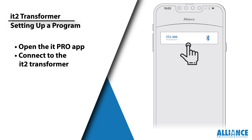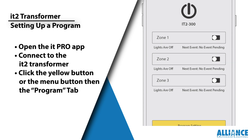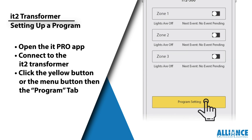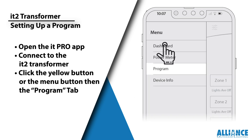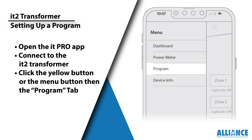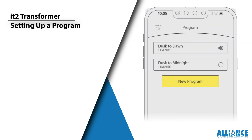Connect to the Transformer through the IT Pro app. From the dashboard you have two options: select the yellow program setting button, or choose the menu button in the top left corner and then select the program tab. Both options will take you to the program page.